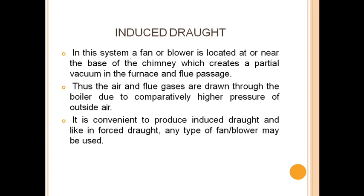In induced draught, a fan or blower is located at or near the base of the chimney, which creates a partial vacuum in the furnace and the flue passages. Thus, the air and flue gases are drawn through the boiler due to the comparatively higher pressure of the outside air. It is very convenient to produce induced draught, and like in forced draught, any type of fan or blower may be used.